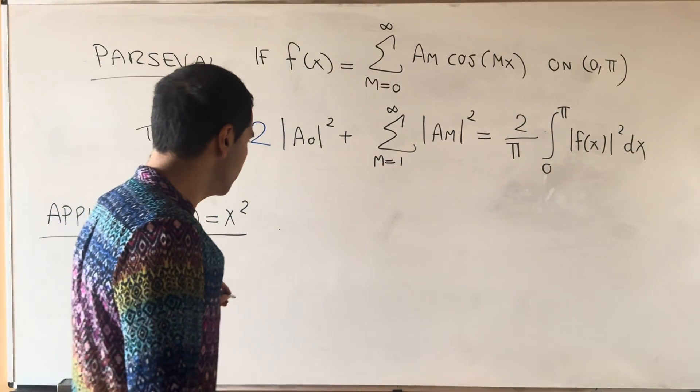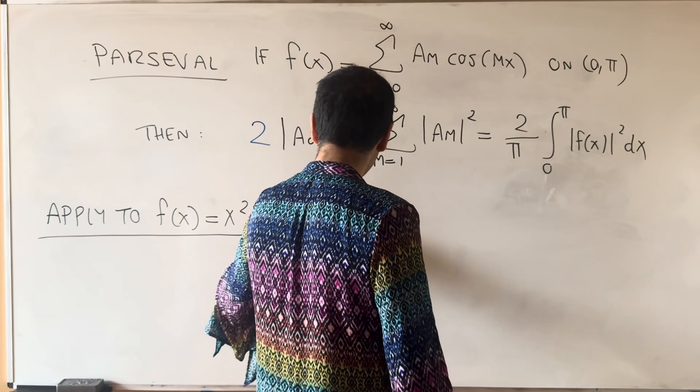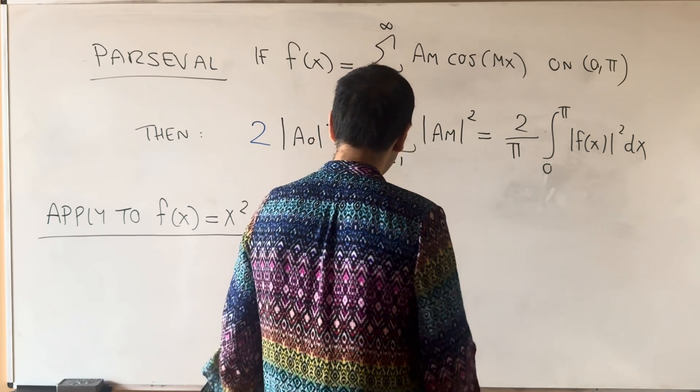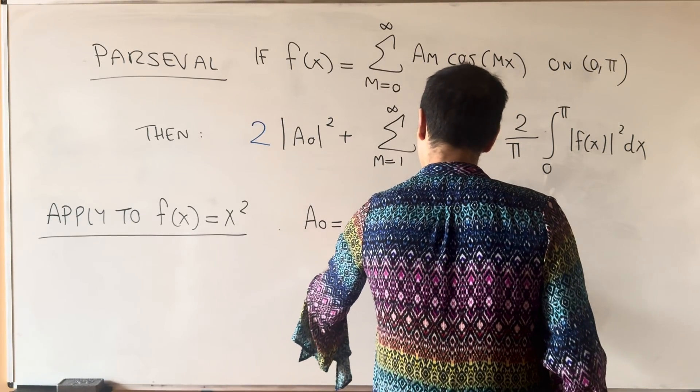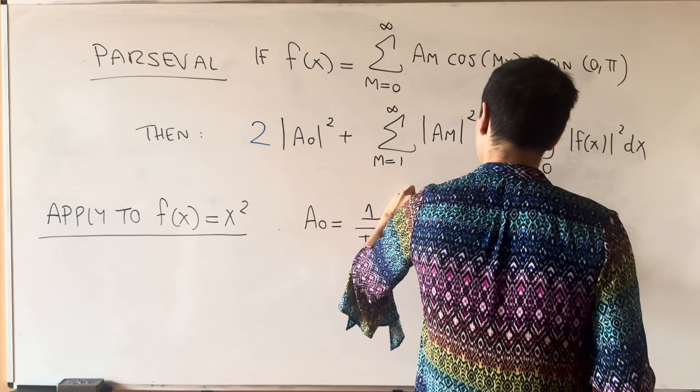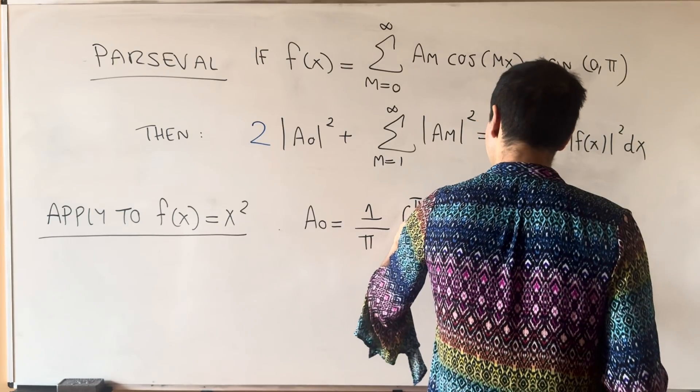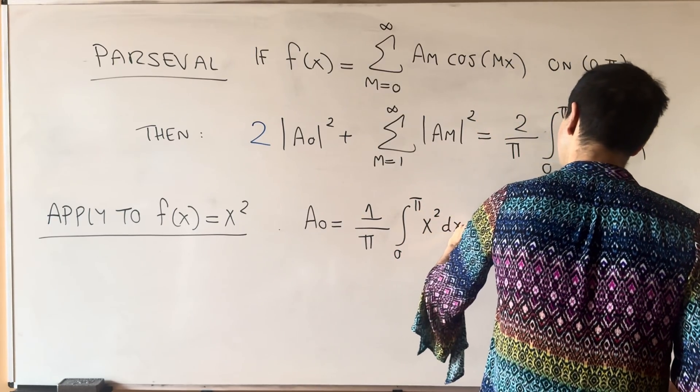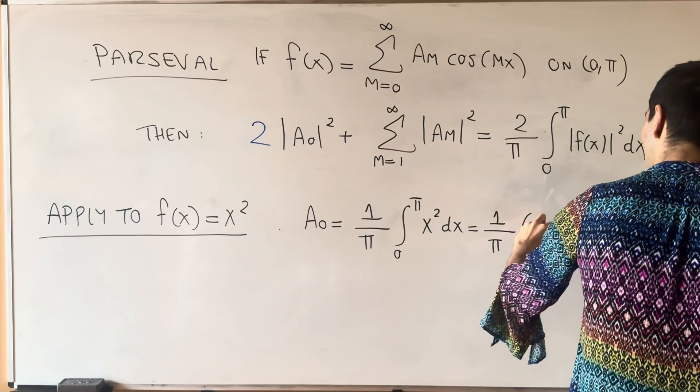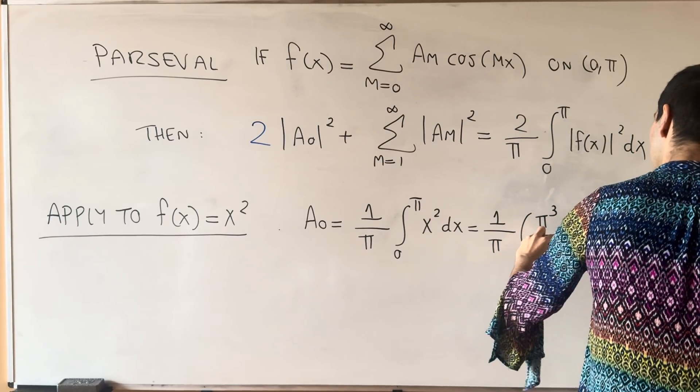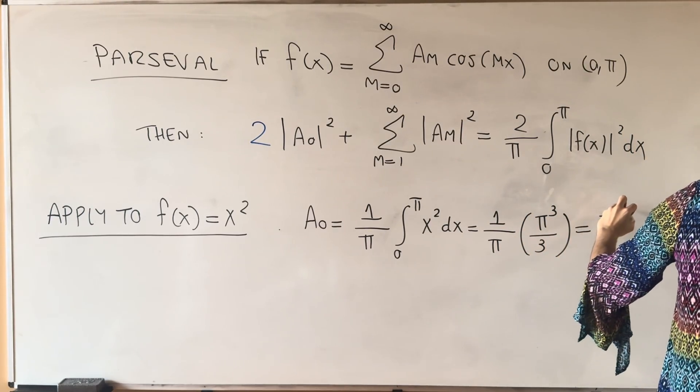Then, what you get is a_0. Remember, not 2 over pi, but 1 over pi, integral from 0 to pi of f of x dx. So x squared dx, which is 1 over pi, and then I believe pi cubed over 3. And so this is pi squared over 3.